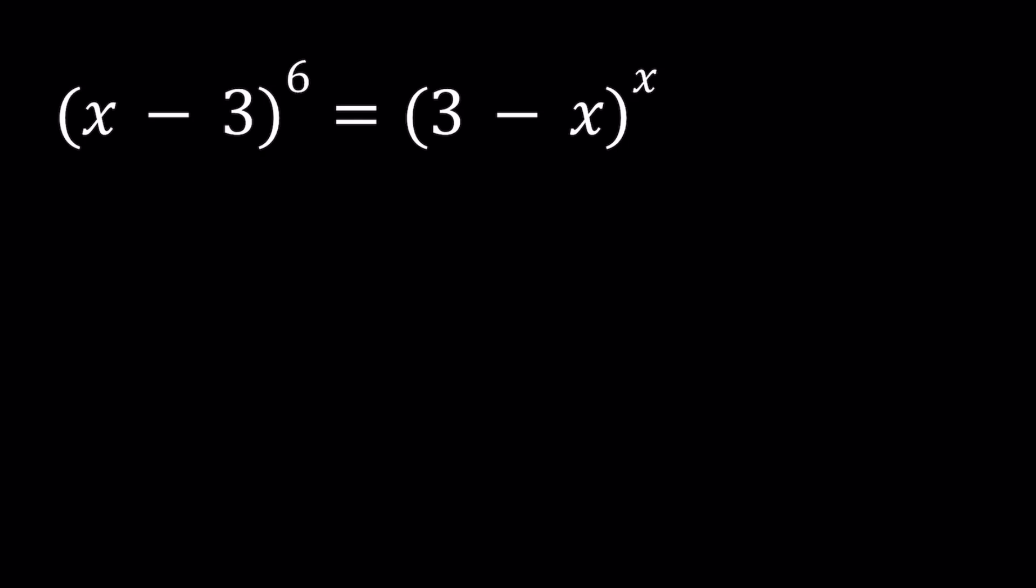I call this interesting because the bases are different and we don't know what is going on with the exponents. But we're going to look at all the cases. First of all, notice that I can switch the base in the first one because 6 is an even number. Therefore, using the rule a to the power 2n being equal to negative a to the power 2n, because the negative doesn't matter here, I can go ahead and do the following.